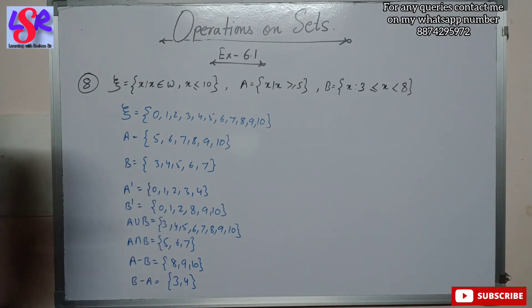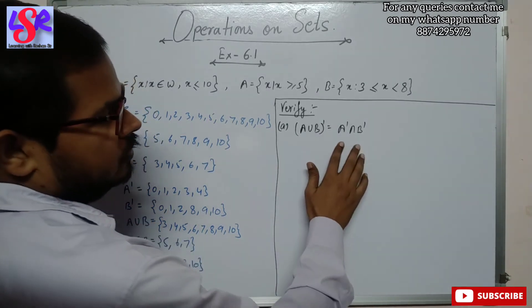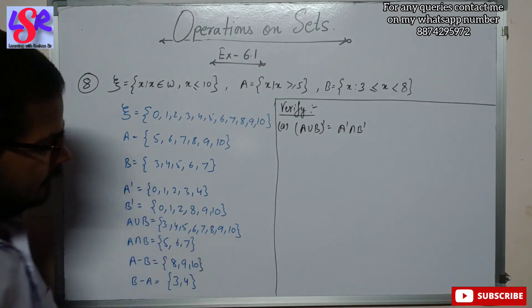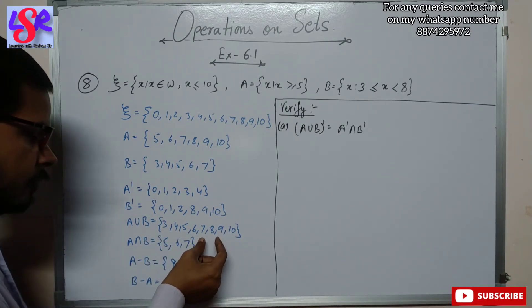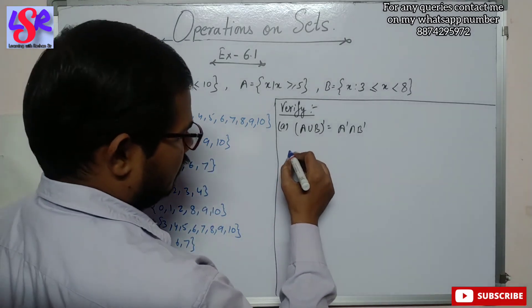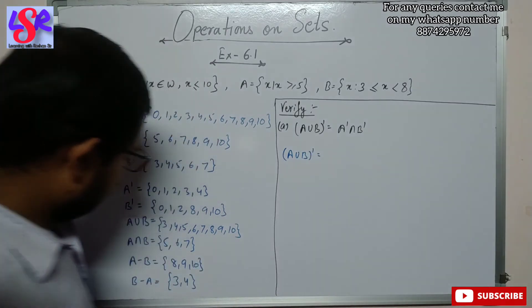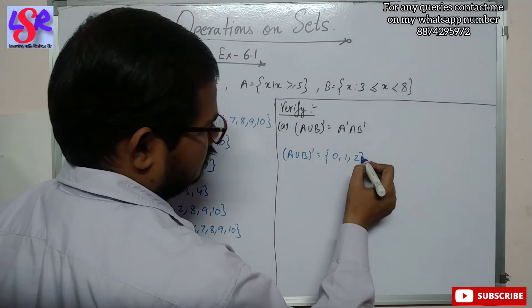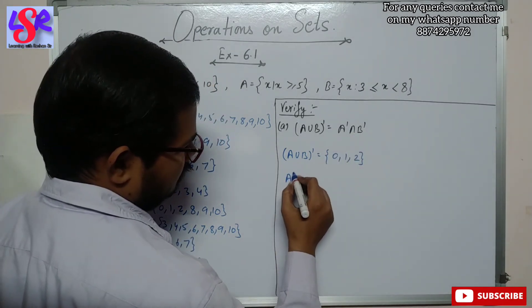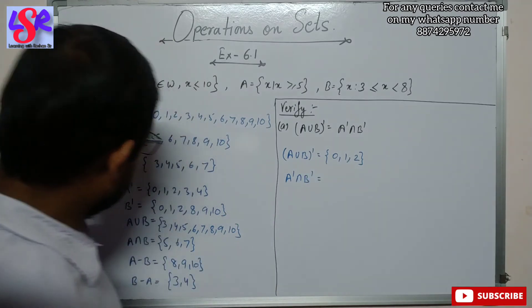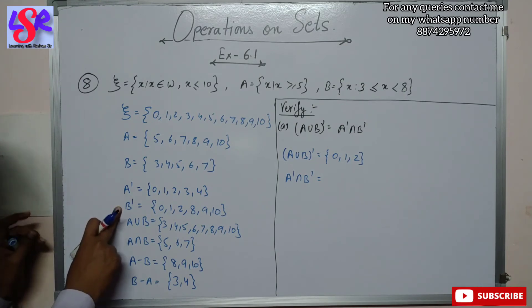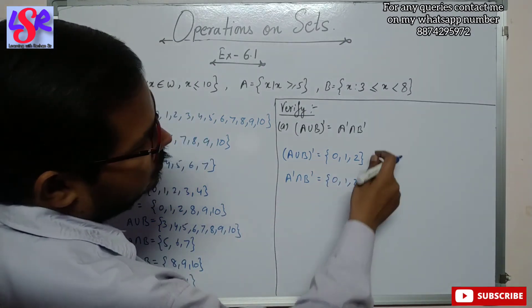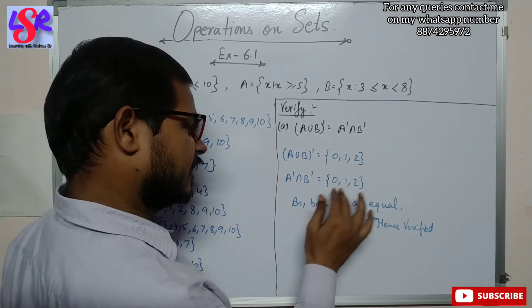Now for verification part A: (A union B) complement equals A complement intersection B complement. A union B = {3,4,5,6,7,8,9,10}, so its complement is {0, 1, 2}. A complement intersection B complement is the common of {0,1,2,3,4} and {0,1,2,8,9,10}, giving {0, 1, 2}. Both sets have the same elements, hence verified.